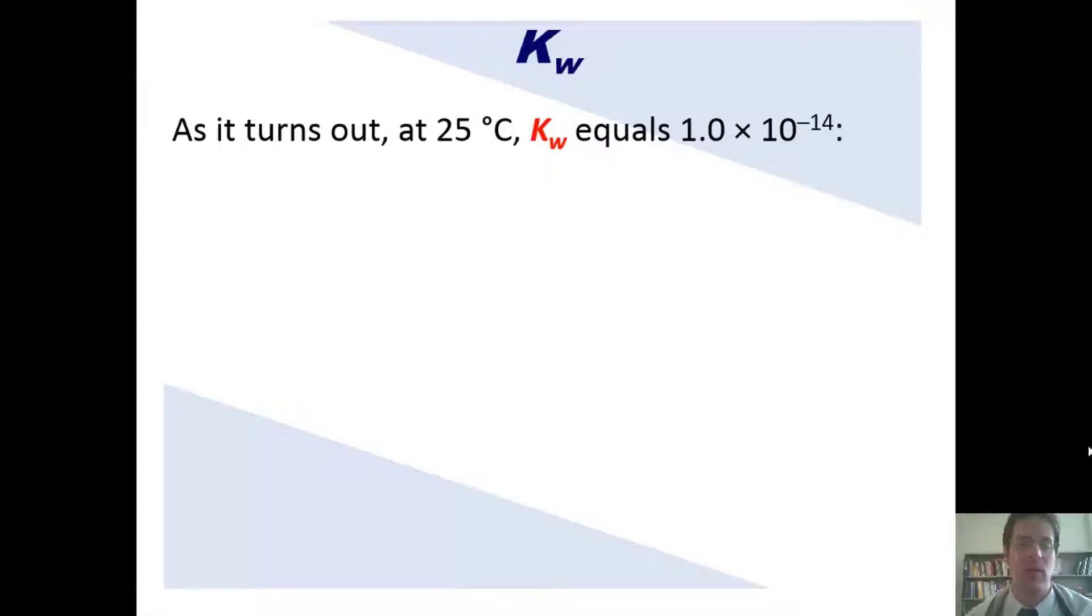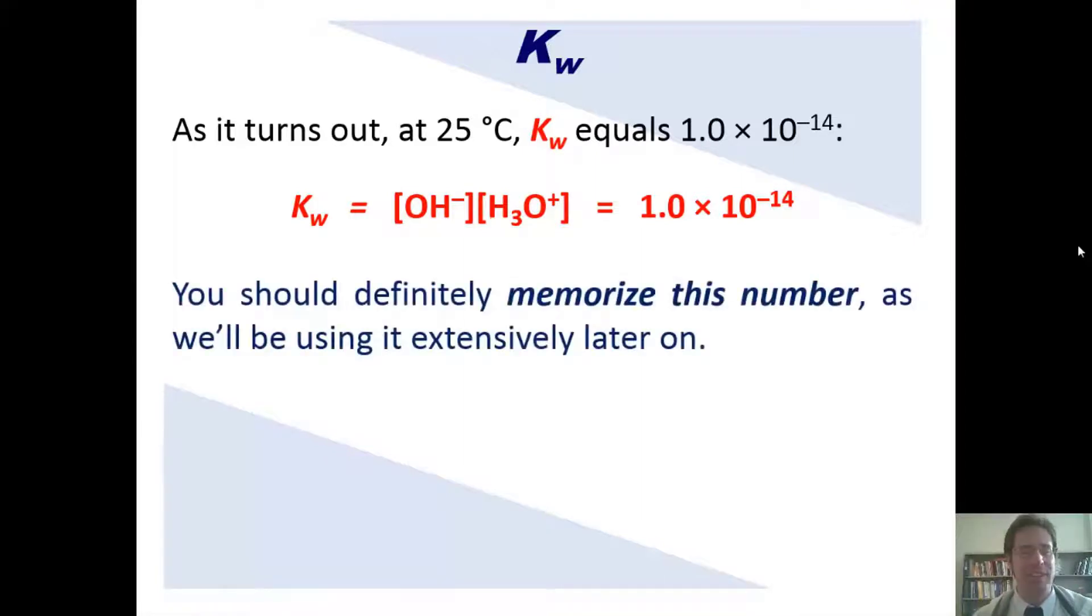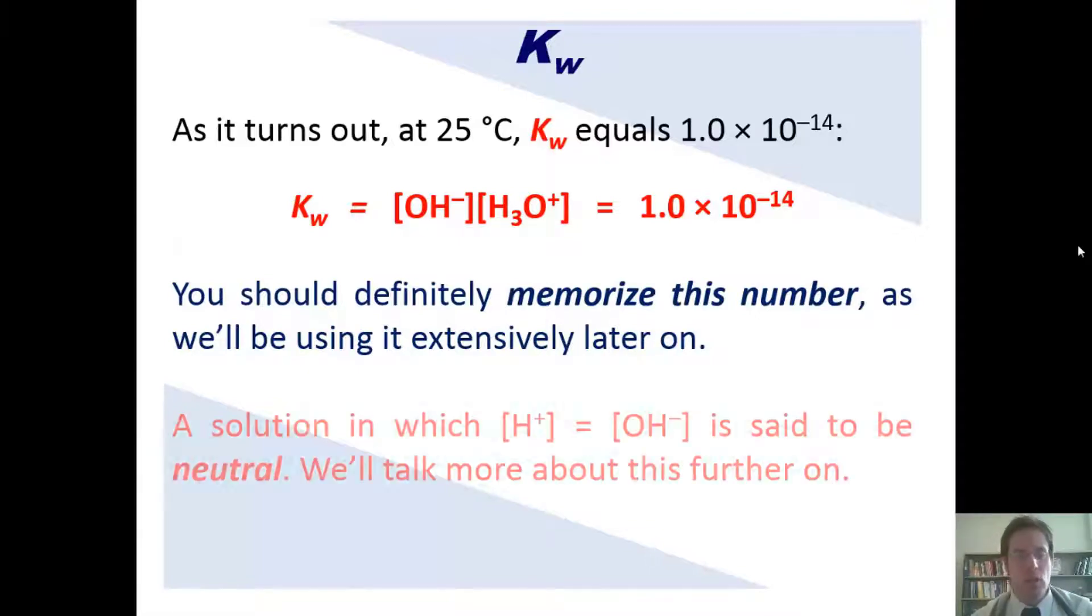As it turns out, at 25 degrees Celsius, kW, this equilibrium constant for water, equals 1 times 10 to the negative 14th, which means that the concentrations of hydroxide and hydronium multiplied together equal that number. You, my students, should definitely memorize this number as we'll be using it extensively later on.